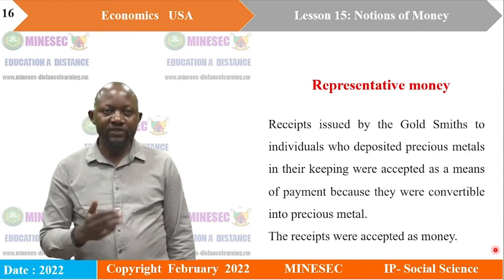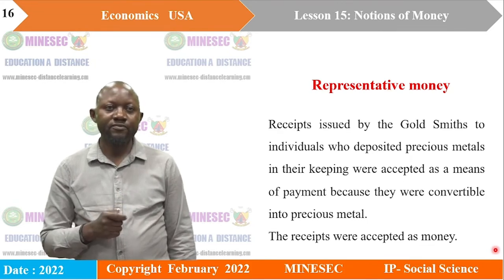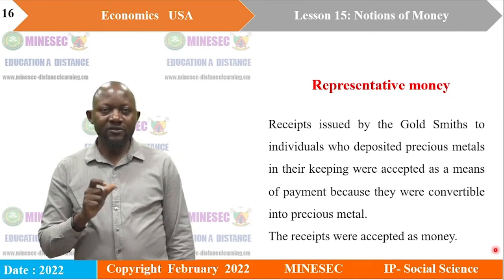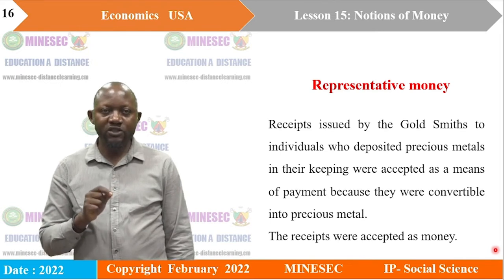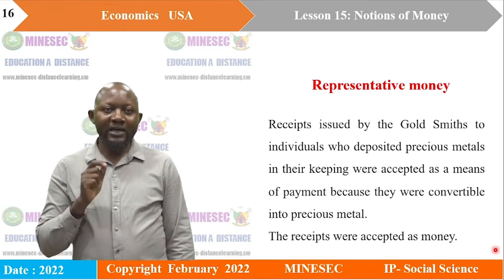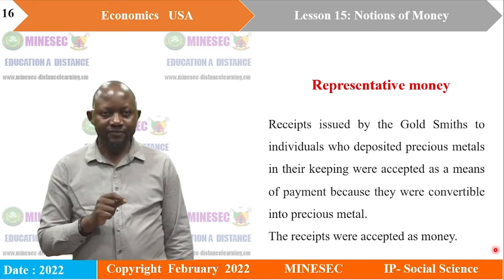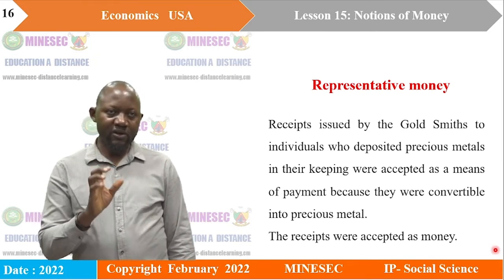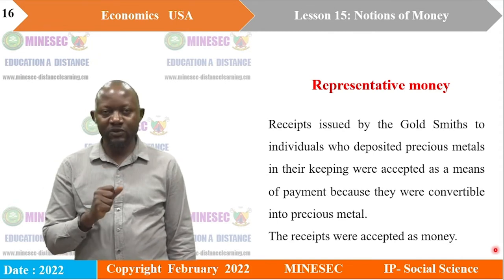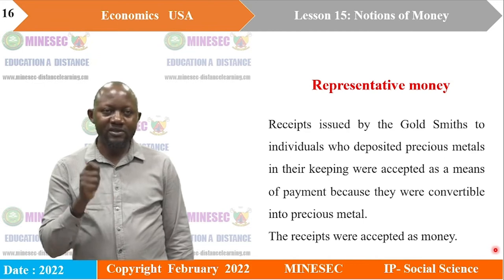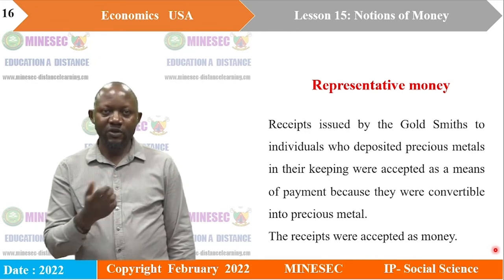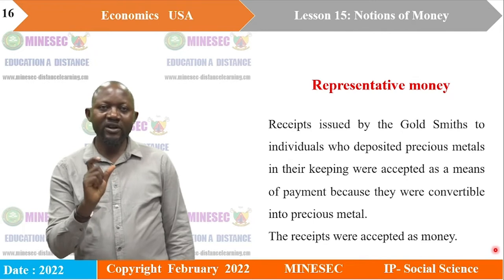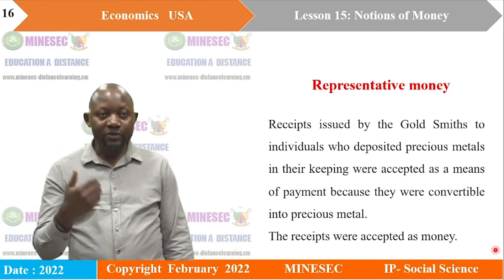The next stage in the development of money is representative money. Receipts issued by goldsmiths — who were the first bankers in those days — to individuals who deposited precious metals in their keeping, were accepted as a means of payment because they were convertible into precious metals. The goldsmiths were the safest place to keep gold, so they received gold deposits and issued receipts. People were then able to use these receipts to buy in the market — that is what we call representative money.